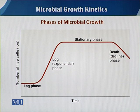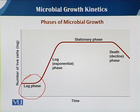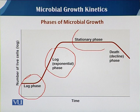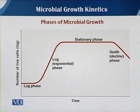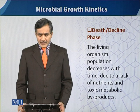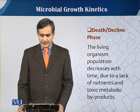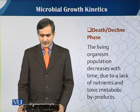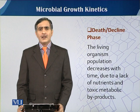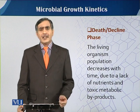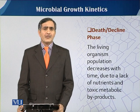In this diagram you can see the different phases: lag phase, which is the first stage, then the exponential phase, then the stationary phase, and the last is the decline phase. The decline phase is when the living organism population decreases with time due to lack of nutrients or by some toxic secretions secreted by the cells themselves. In the decline phase, the death rate exceeds the birth rate.